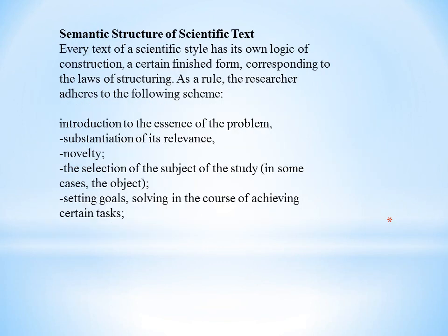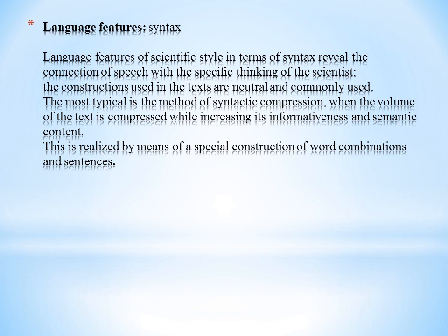Semantic structure of scientific text. Every scientific text has its own logical construction, a certain finished form corresponding to the laws of structuring. As a rule, the research adheres to the following scheme: first, introduction to the essence of the problem; second, substantiation of the relevance; three, novelty; then, selection of the subject of the study, and in some cases the object; and four, setting goals, solving problems, and achieving certain types. As for the language feature of syntax, it reveals the connection of speech within the specific linking of the scientist. The constructions used in the text are neutral and commonly used. The most typical is the method of syntactic compression when the volume of the text is compressed while increasing its informativeness and semantic content, realized by means of special construction of word combinations and sentences.